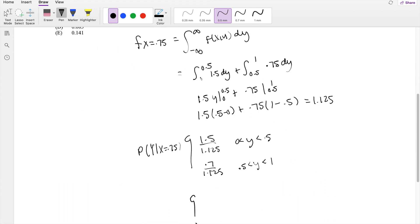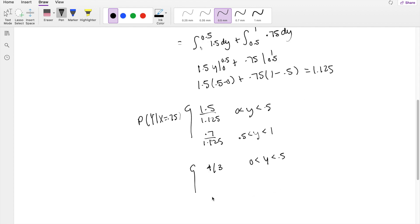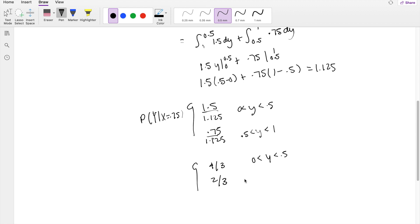Simplifying this down, we get 4 thirds, 4 1, y is between those two numbers, and 2 thirds between 0.5 and 1.